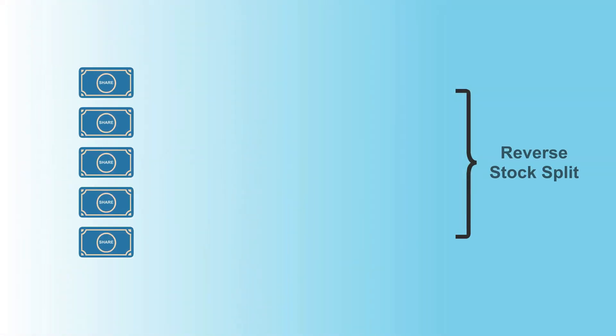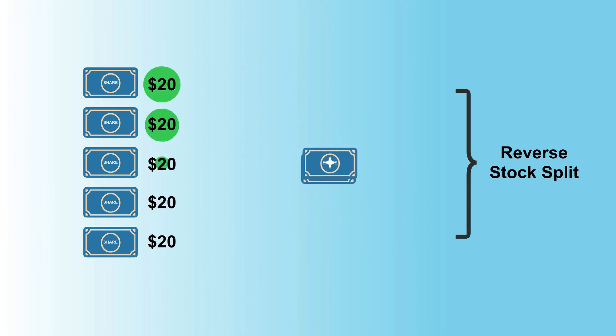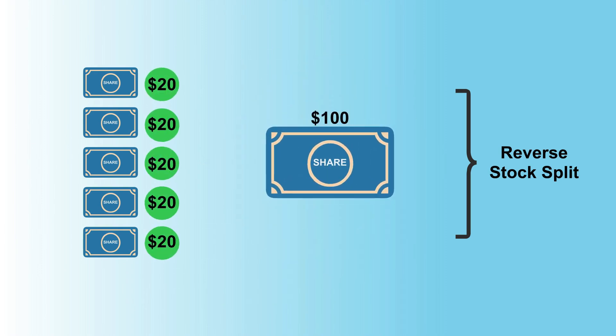A reverse stock split is the opposite of a traditional stock split. A company reduces the number of shares it has in a reverse stock split to raise the price of each share.